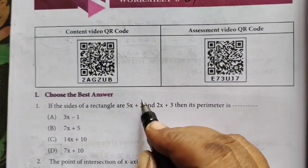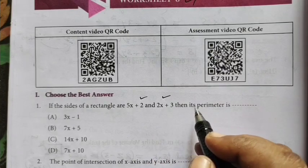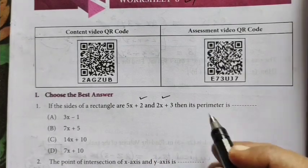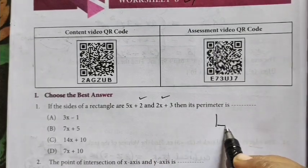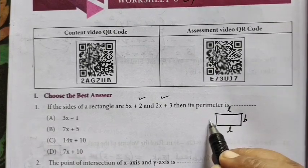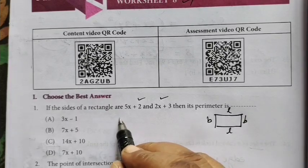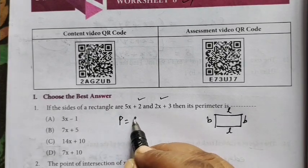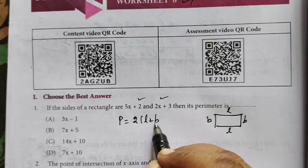If the side of a rectangle are this and this, then it's perimeter. Rectangle perimeter formula 2 bracket L plus B. This is L, B, L, B. So 2 bracket L plus B.